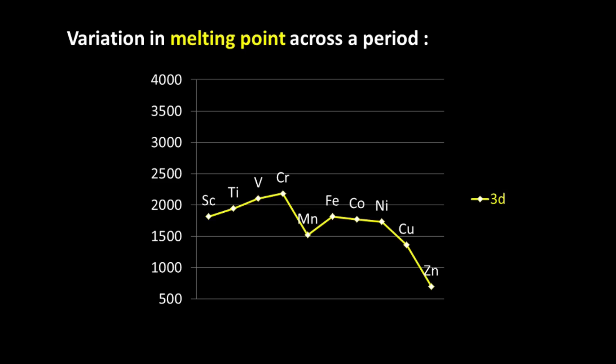Now I am sure you must be thinking what about the dip in manganese. Manganese has a lower than expected melting point. This is because besides the fact that some of the anti-bonding molecular orbitals start filling up with manganese, it also has a D5-S2 electronic configuration.